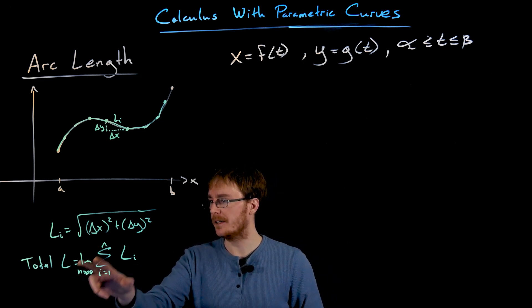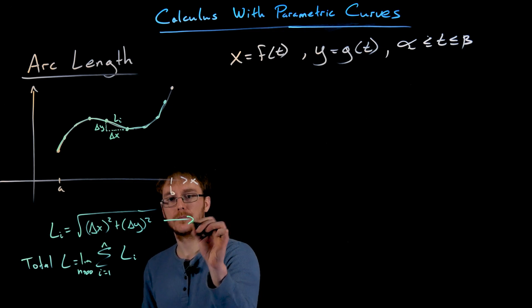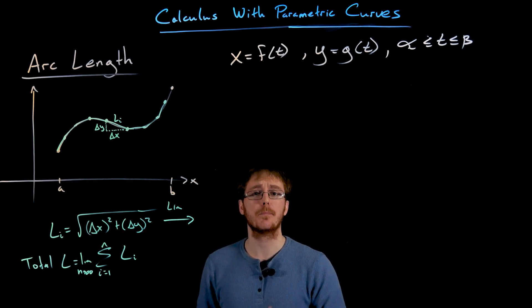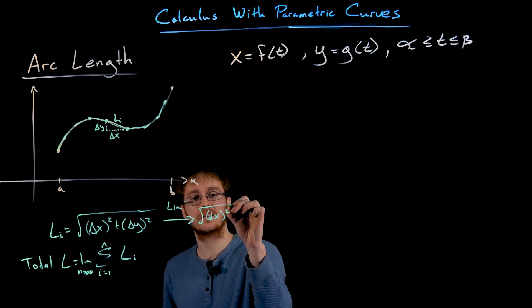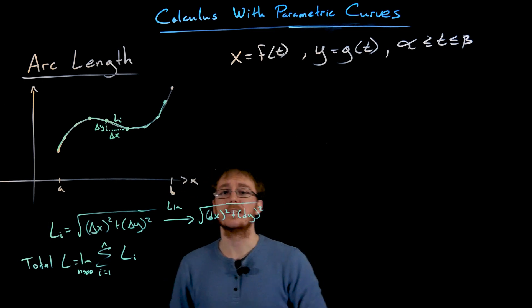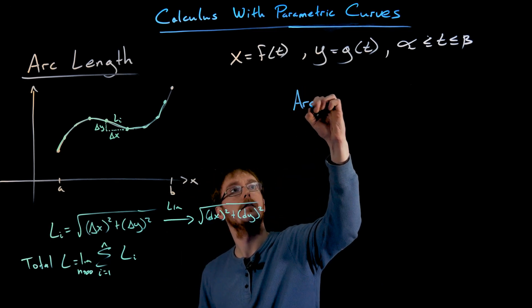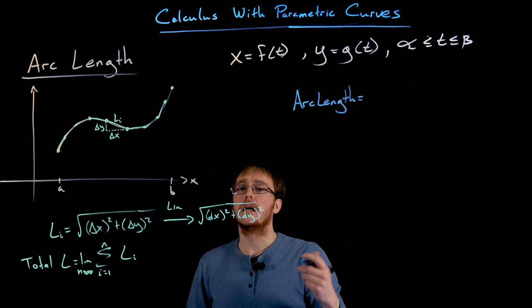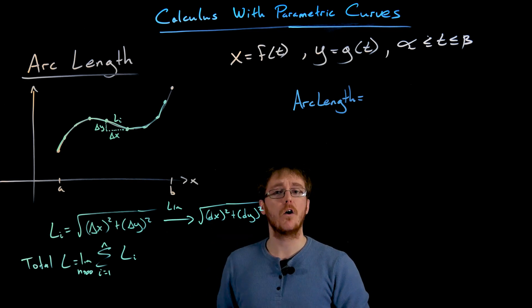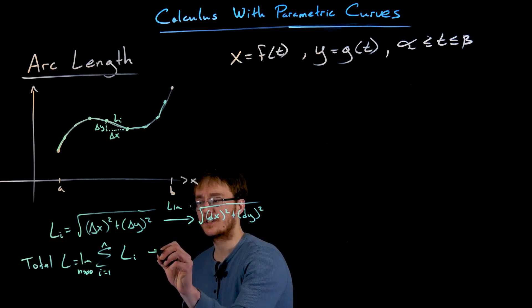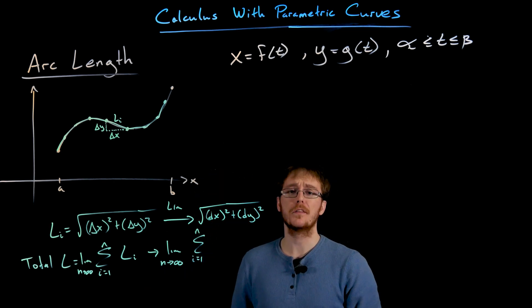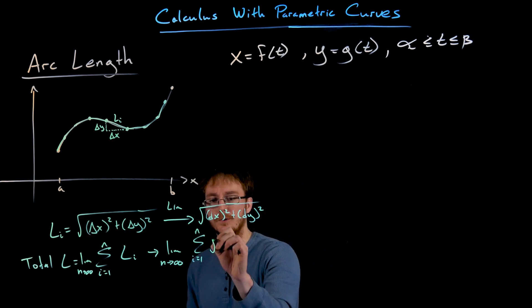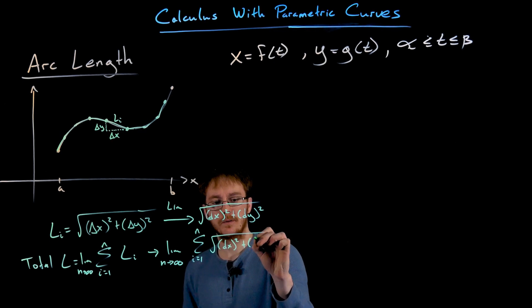What happens when we apply that limit to delta X and delta Y? When we take the limit, delta X turns into the differential of X, and delta Y turns into the differential of Y. So to find arc length, we add up all these square roots of DX squared plus DY squared. Our arc length formula becomes the limit as n goes to infinity of the sum of the square root of DX squared plus DY squared.